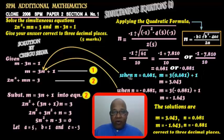When n equals 0.681, we substitute n in equation 1, m equals 3n plus 1. So m equals 3 times 0.681 plus 1, which gives you 3.043.